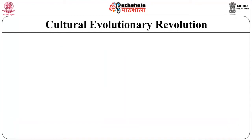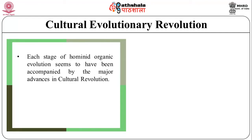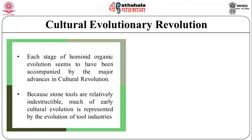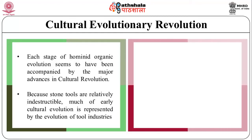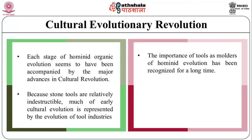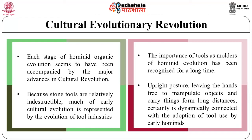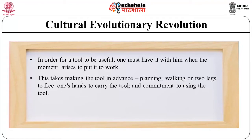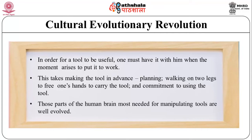Now let's look at the Cultural Evolutionary Revolution. Each stage of hominid organic evolution seems to have been accompanied by major advances in cultural revolution. Because stone tools are relatively indestructible, much of early cultural evolution is represented by the evolution of tool industries. Upright posture, leaving the hands free to manipulate objects and carry things for long distances, is dynamically connected with the adoption of tools by early hominids. In order for a tool to be useful, one must have it when the moment arises. This requires making the tool in advance, planning, walking on two legs to free one's hands, and commitment to using the tool. Those parts of the human brain most needed for manipulating tools are well evolved.